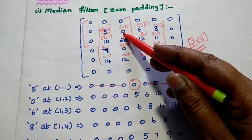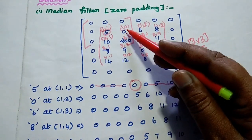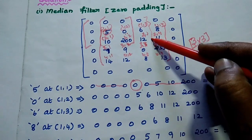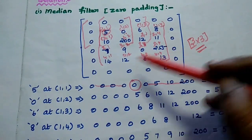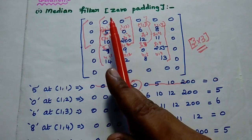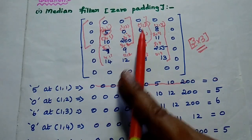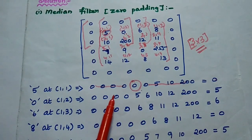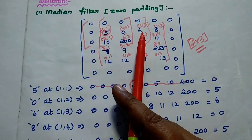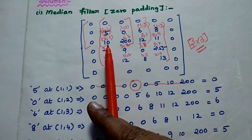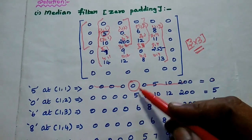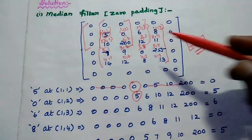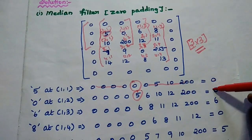Next we can move on to the second position — pixel value 0. At that time we consider the next neighboring pixels. For this 0, the neighboring pixels give us 4 zeros, then 5, then 6, 10, 12, 200. So here the median value is 5. So 0 can be replaced with that value 5.